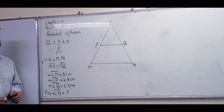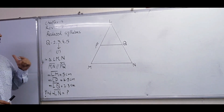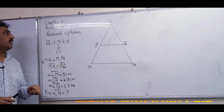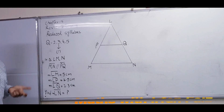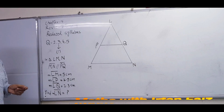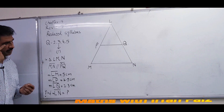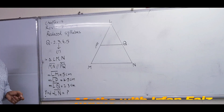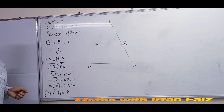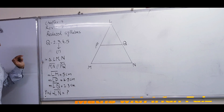Today we will discuss Chapter 14 in our reduced syllabus. There is no theorem assigned in this chapter. In the review exercise, the assigned questions are number two, three, four, and five. Question number two is a very simple question about definitions — what is ratio, what is proportional, concurrent triangles, and similar triangles. Questions three, four, and five involve the use of theorem results to find unknown values.